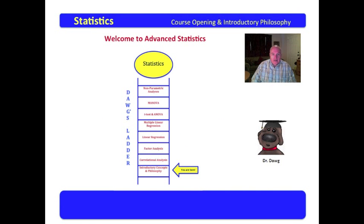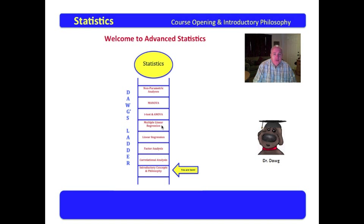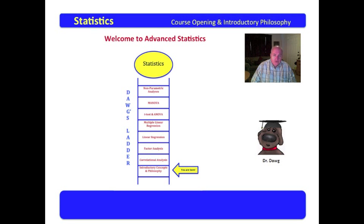I want you to look here at what I call the Dog's Ladder. These are the topics that we will be reviewing in this course. Don't get discouraged — you're going to start here and finish here, walking on to master these topics. We will cover introductory concepts and course philosophy, correlational analysis, factor analysis, linear regression, multiple linear regression, t-test and ANOVA — a t-test is an ANOVA with only two groups — then MANOVA, and nonparametric designs. So you will be climbing Waller's Ladder in this course.